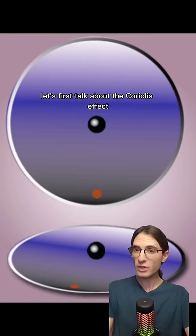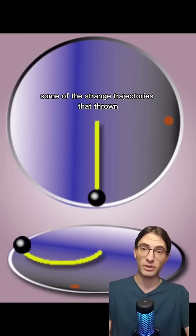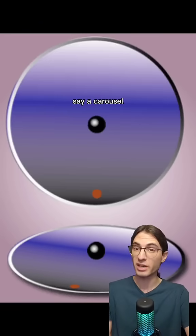To prime your intuition, let's first talk about the Coriolis effect. The Coriolis effect is responsible for some of the strange trajectories that thrown objects have when you're on, say, a carousel.